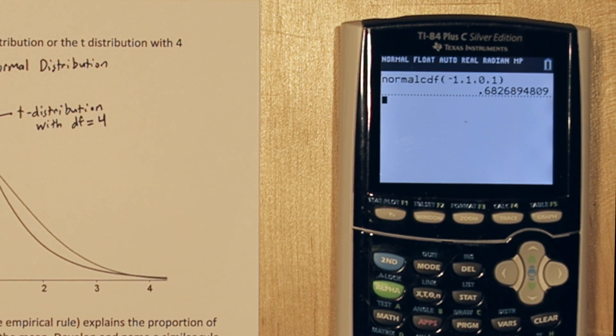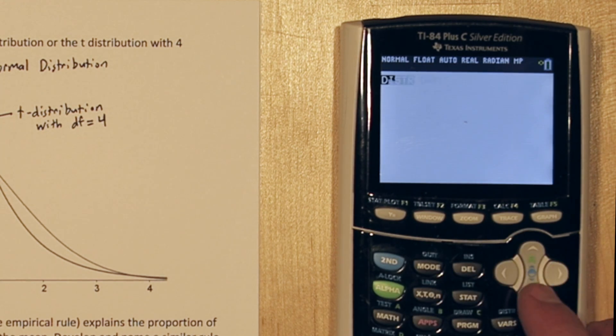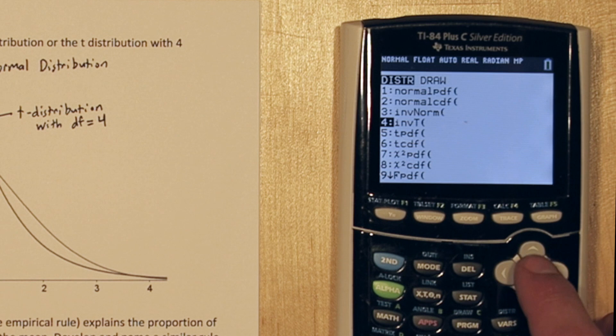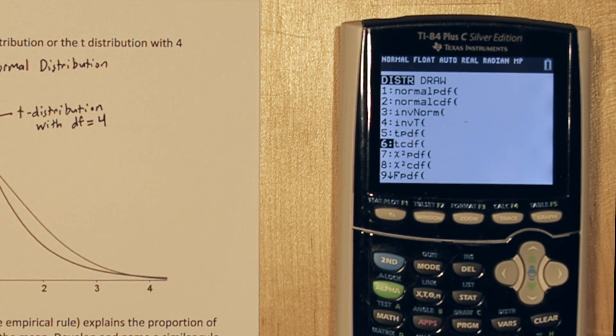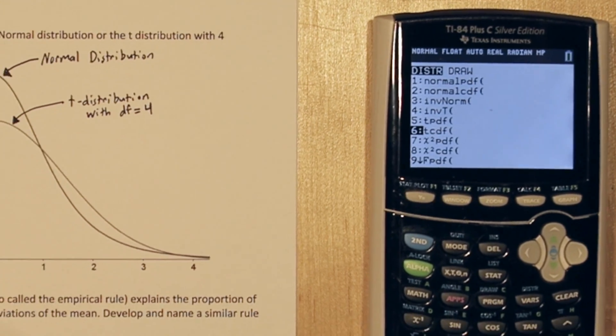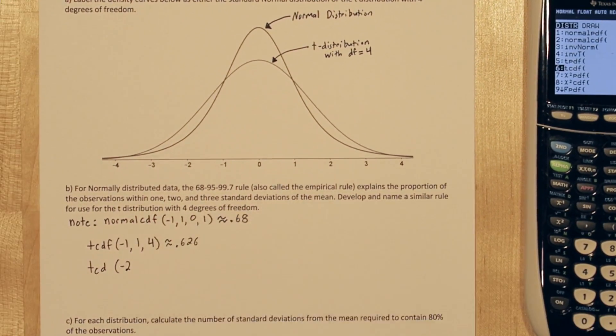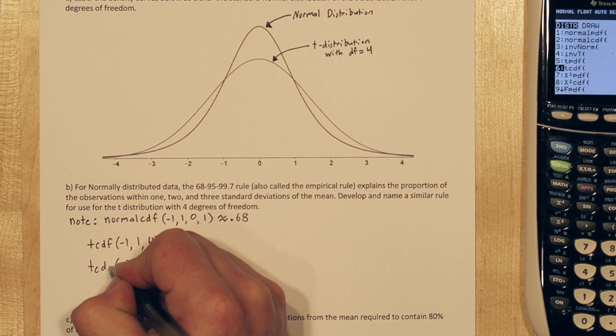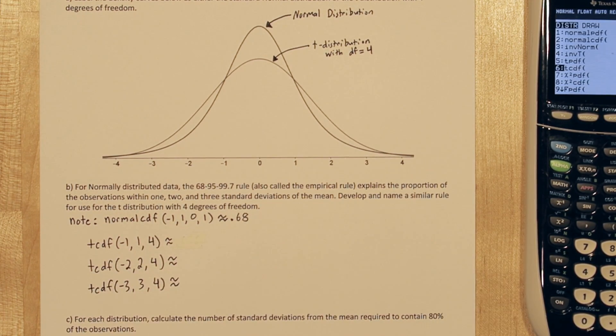So we need to do the same thing for a t-distribution with 4 degrees of freedom. So if we press 2nd, vars again, we see they have this function tcdf, and that's what we're going to use. So let's run tcdf for 1 standard deviation from the mean, 2 standard deviations from the mean, and 3 standard deviations from the mean, and see what we get.